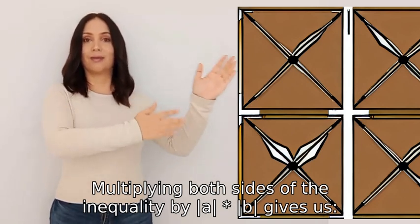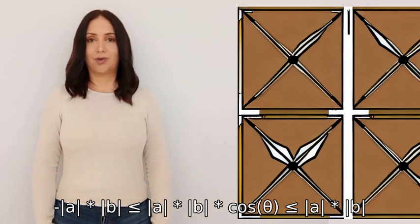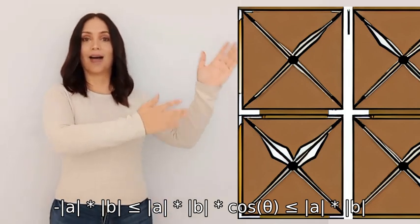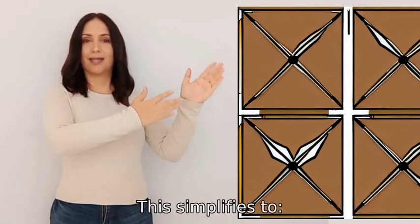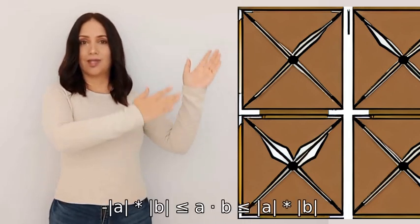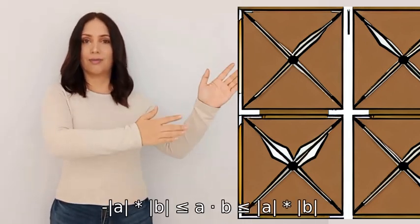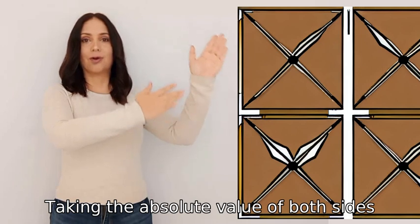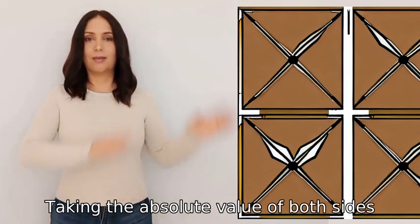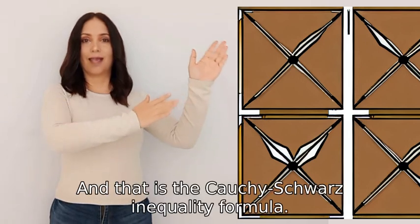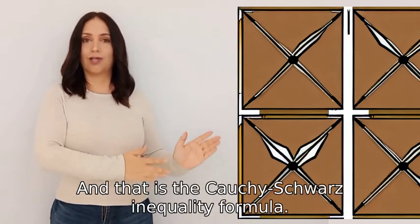|a| * |b| gives us -|a| * |b| ≤ |a| * |b| * cos(θ) ≤ |a| * |b|. This simplifies to -|a| * |b| ≤ a · b ≤ |a| * |b|. Taking the absolute value of both sides, we obtain |a · b| ≤ |a| * |b|, and that is the Cauchy-Schwarz inequality formula.